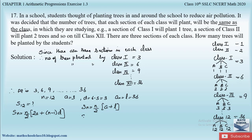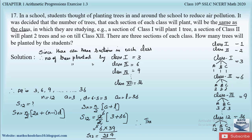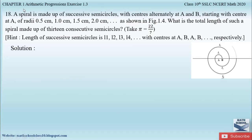Let us substitute the values. Sum of the 12 classes = 12/2 × (3 + 36) = 6 × 39 = 234. Therefore the number of trees planted by the students is S12 = 234. So this is how we solve this problem.